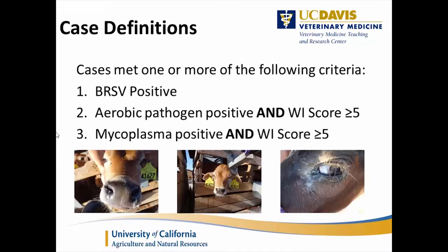For case definitions, a calf would have to have been BRSV positive; or had an aerobic pathogen positive with a Wisconsin score greater than or equal to 5; or a mycoplasma positive with a Wisconsin score of greater than or equal to 5.